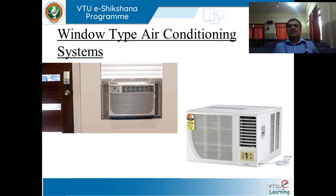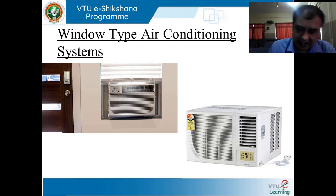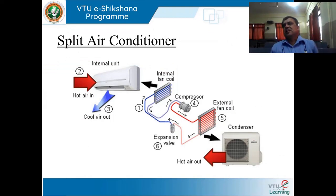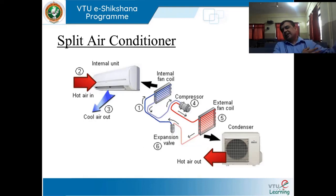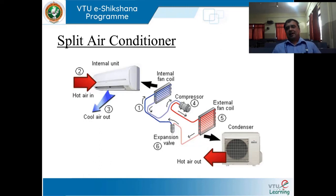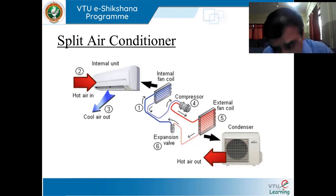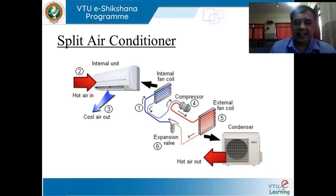Air conditioners are now ubiquitous — you find them everywhere, and it is almost not possible for us to survive without them. When we consider the principle of operation of a split air conditioner, we come across components like evaporator, compressor, condenser, and expander — these names are not new to us, as we already encountered them in the refrigeration system. In addition, we find a capillary, ducts, and air filter, which are important because along with air circulation, we also check the purity of air.